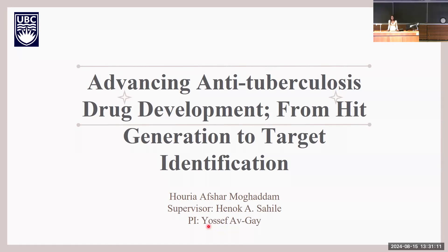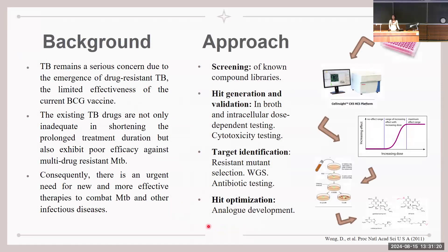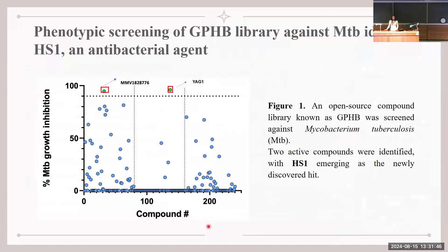My name is Coria, and this summer I've been working at the Avgay Lab focusing on advancing tuberculosis drug development. Mycobacterium tuberculosis is the leading cause of death among infectious agents. Although antibiotic treatments provide an option, the regimen is very long and demanding and contributes to the emergence of multi-drug resistant strains, so there is an urgent need for new therapies. Our lab previously performed phenotypic screening of an open source compound library called GPHB against mycobacterium tuberculosis, identifying two active compounds. HS1 was chosen for further investigation.